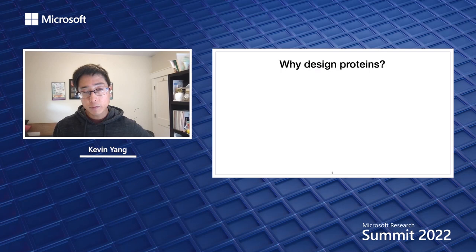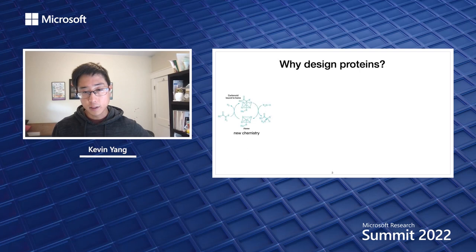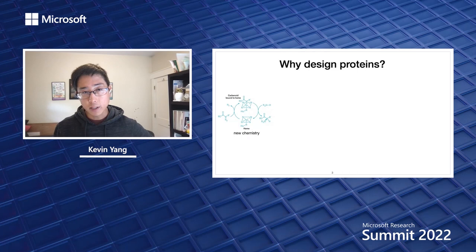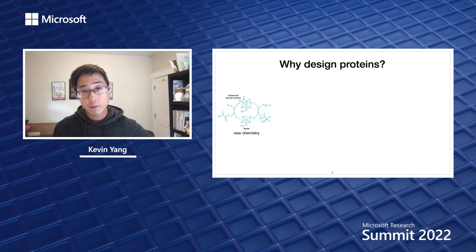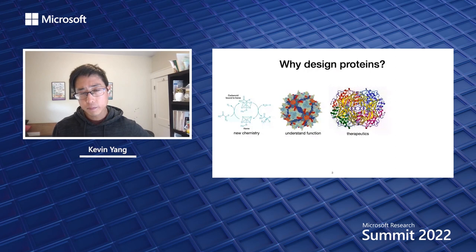Today we're going to talk about designing proteins. Why would we want to design proteins? Maybe we want to do new chemistry — some proteins called enzymes catalyze reactions responsible for biochemistry in our body, and we can repurpose these to catalyze reactions for industrial purposes, for example making carbon-silicon bonds using an engineered enzyme. We might also want to understand how proteins function to better treat disease, or use proteins as therapeutics, such as asparaginase, which breaks down asparagine and can kill cancer cells that have lost the ability to synthesize it.